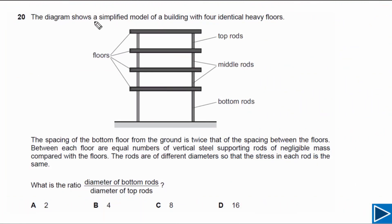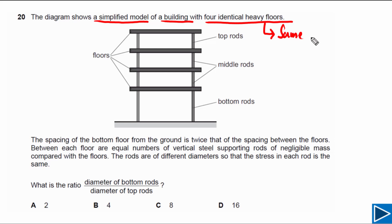For this question it is given that there is a simplified model of a building with four identical heavy floors. Identical heavy floors simply means that each floor has the same weight. We can write down here that each floor has the same weight, and let's say the weight of each floor is equal to W.